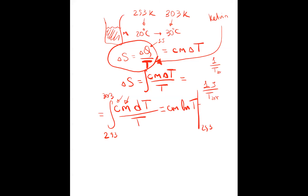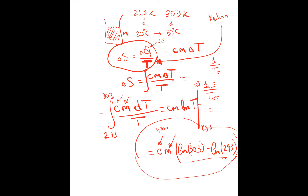Evaluating between 293 and 303, this gives C times m times the log of 303 minus the log of 293. This will be a positive number. The heat capacity of water is 4,200, and given the mass, you can compute this number — it gives the change of entropy of the water. The units of entropy are joules divided by Kelvin.